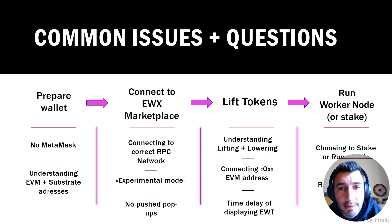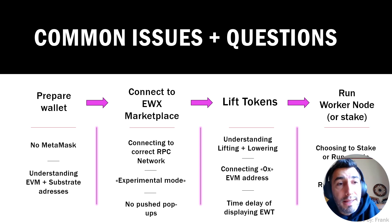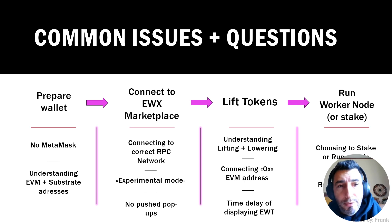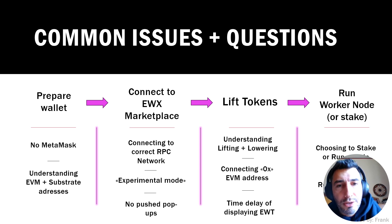In preparing the wallet, it's been written a lot: the Marketplace doesn't support MetaMask because MetaMask doesn't support the newest version effectively. So you need to find another provider such as the SubWallet, within which you can actually input your MetaMask without needing to create a new EVM address. Connecting to the Marketplace, there are some issues with people finding the right RPC network. There are also little things like running with a VPN, not being in experimental mode, or not finding the popup notification to approve a transaction.